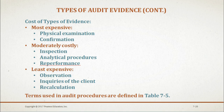The two most expensive types of evidence are physical examination and confirmation. Physical examination is expensive because it normally requires the auditor's presence and travel to scattered geographical locations. Confirmation is also expensive because the auditor must follow careful procedures in preparation, transmittal, receipt, and follow-up of non-responses. In contrast, inspection, analytical procedures, and re-performance are moderately costly. The three least expensive types of evidence are observation, inquiries of the client, and recalculation.